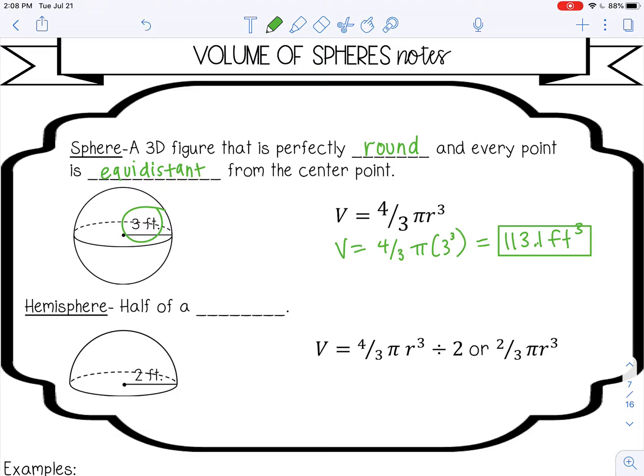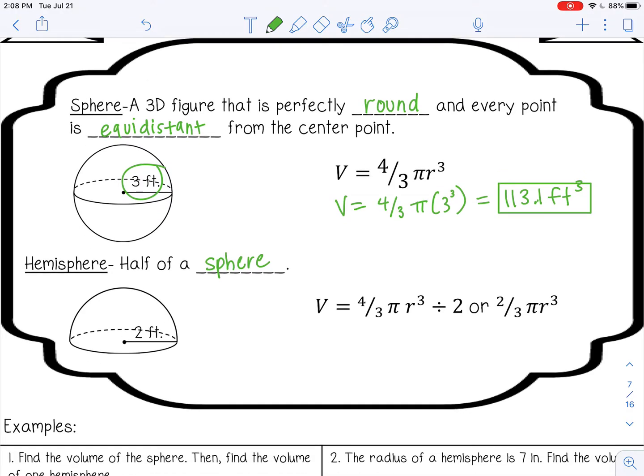A hemisphere is half of a sphere. So there's a couple different ways you can find the volume of a hemisphere. You can just find the volume of the whole sphere and divide by two, or you can use this formula, two thirds pi r cubed, which is just half of the sphere formula.